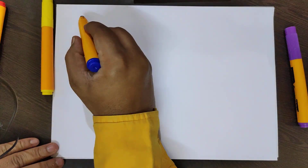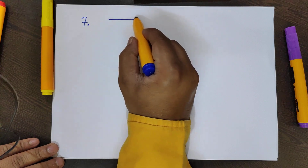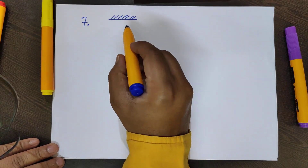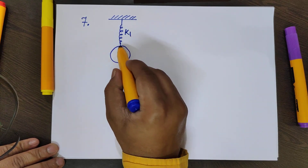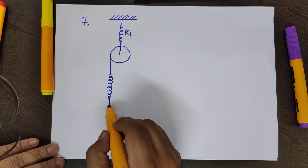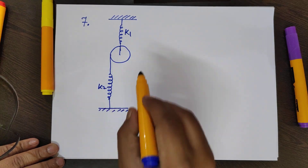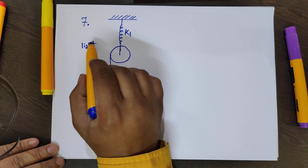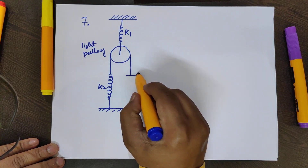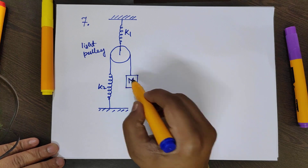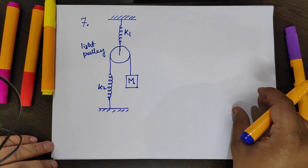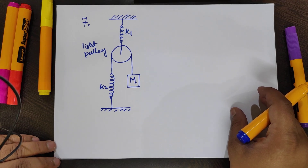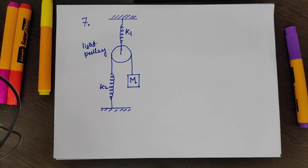Another similar problem with a slight modification is question 7. It is basically a combination of problems 5 and 6. There is a spring of constant k1, another spring k2, a light massless pulley, and a block of mass m. Again for finding the time period, we put gravity as zero.